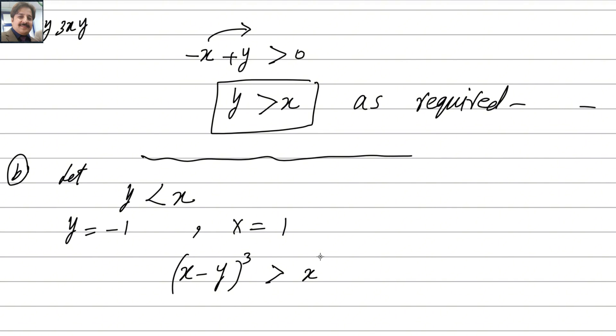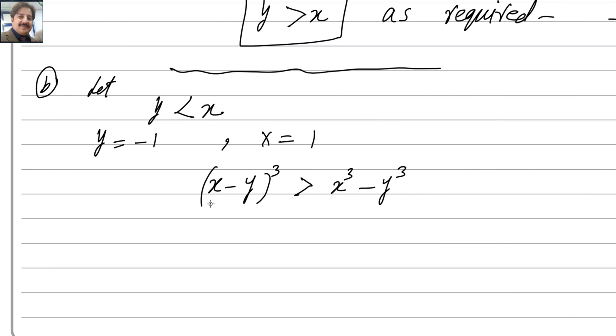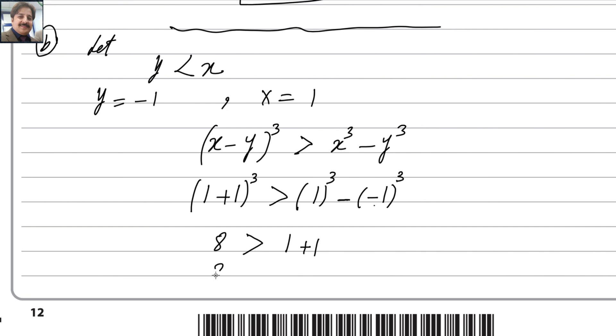Plug in the values: (1 - (-1))³ greater than 1³ - (-1)³. On the left side, 1 plus 1 equals 2, and 2³ equals 8. On the right side, 1 minus (-1) equals 1 + 1 equals 2. So we get 8 greater than 2, which is true.